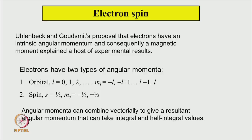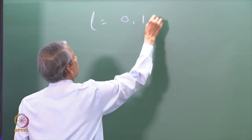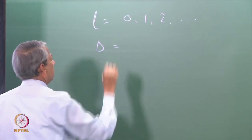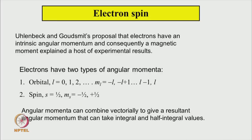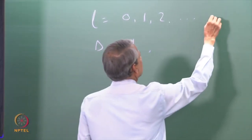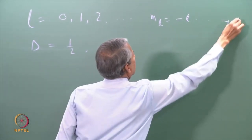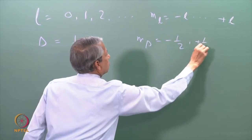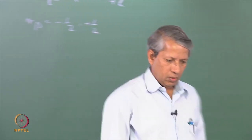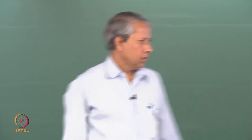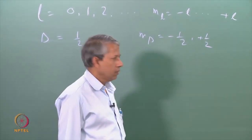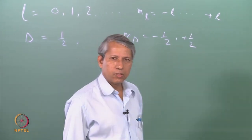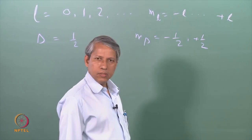According to Bohr's model, orbital angular momentum takes only integral values l, and spin angular momentum, according to Uhlenbeck and Goldsmith, takes only half-integer values. The component of orbital angular momentum will be m_l from minus l to plus l, and the component of spin angular momentum will be S_z equal to minus half and plus half. Angular momentum is a vector quantity — it has a certain direction, and the spin component can be minus half or plus half.